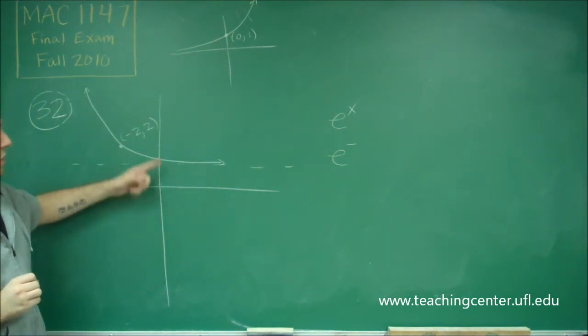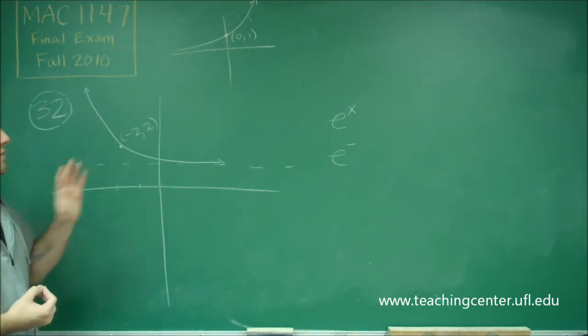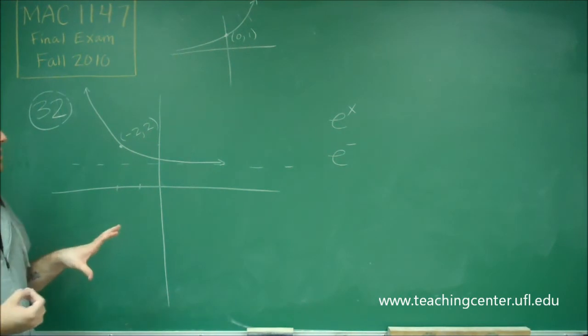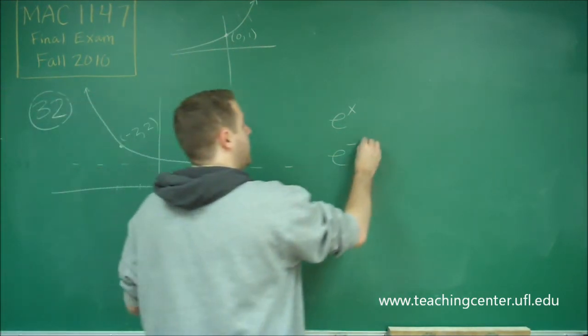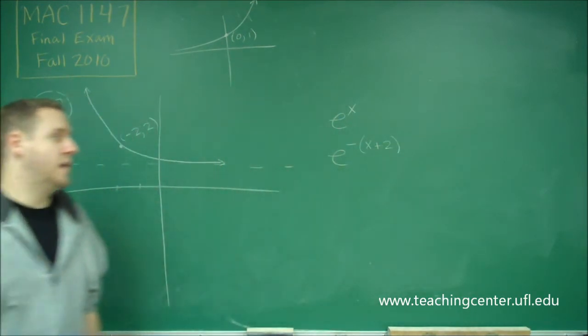Remember that if we had a vertical reflection, we would put the negative outside the entire function. So we have to make just the x part negative, but it's shifted to the left 2. So we have to put x plus 2 in parentheses. So that's the important part here.